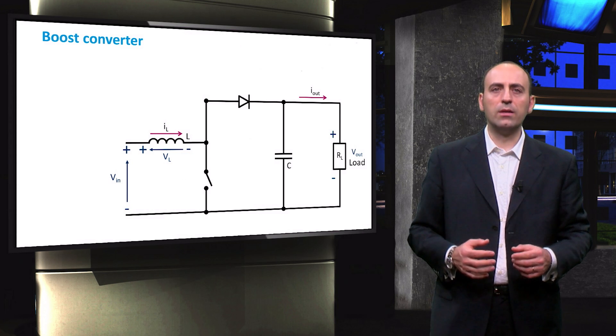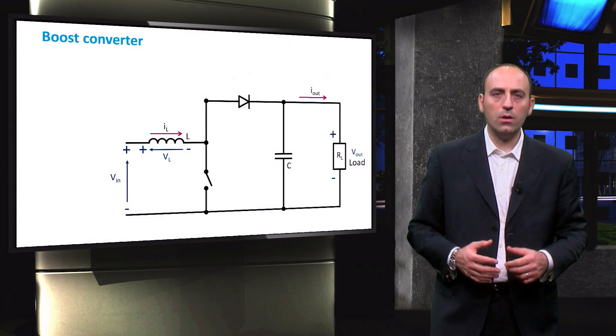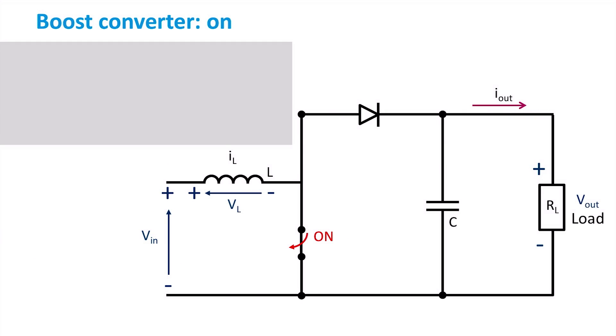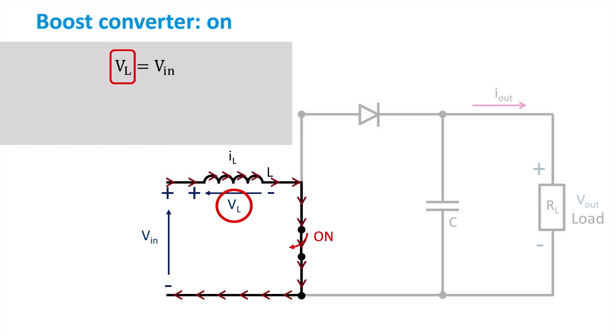Let's see what happens when the switch is closed. During the ON cycle, the switch short-circuits its branch, allowing current to flow directly to the negative pole of the PV generator without passing through the network on the right-hand side. The resulting circuit is easy to analyze with Kirchhoff's voltage law, since the voltage across the inductor is the same as the input voltage.